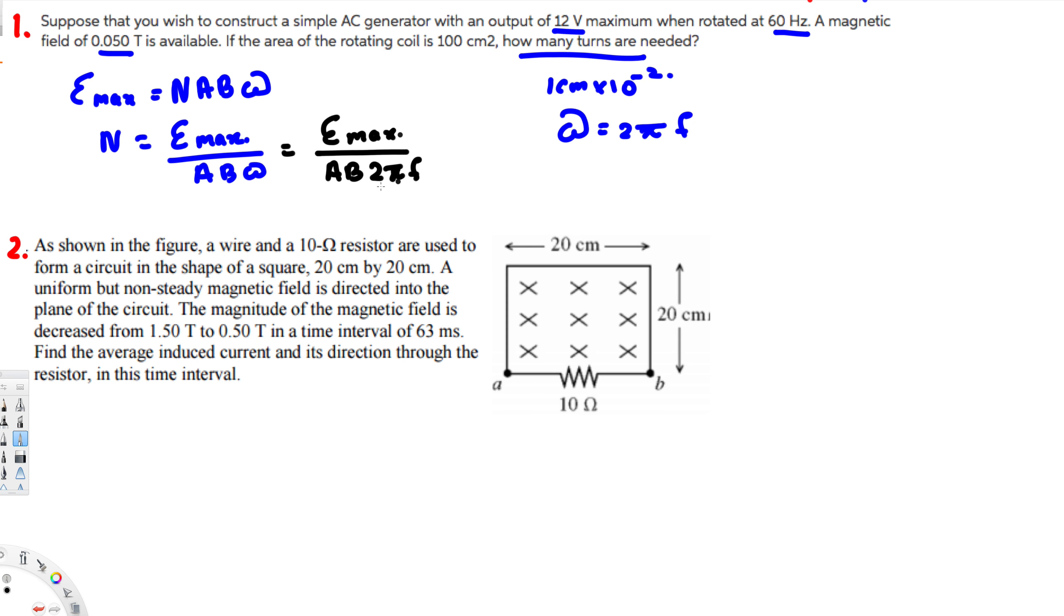Now let's plug the values. So here we are going to have EMF maximum, that is 12 volts, over area that is 100 centimeter square, so 100 times 10 to the power of minus 4 meter square, times B, the magnetic field that is 0.05 Tesla, times 2π times the frequency that is 60 Hertz. If you calculate these values, you should get 64 turns. So that's going to be the final answer.